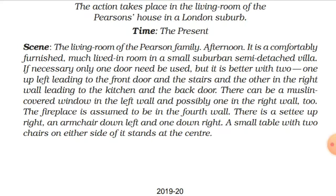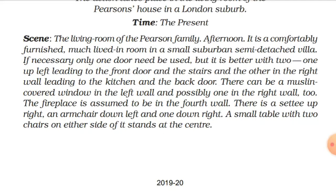If necessary, only one door need be used, but it is better with two — one up left leading to the front door and the stairs, and the other in the right wall leading to the kitchen and the back door. There can be a muslin-covered window in the left wall. The fireplace is assumed to be in the fourth wall. There is a settee, an armchair down left and one down right, and a small table with two chairs at the center. This describes the condition of the room where the play is performed.